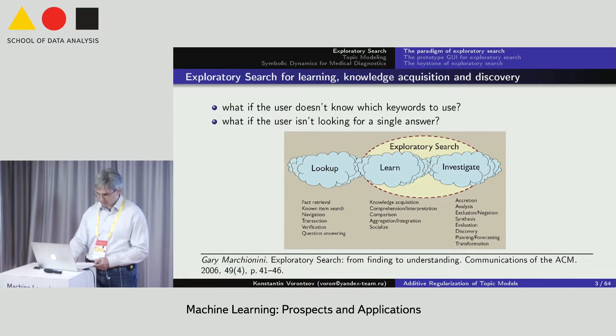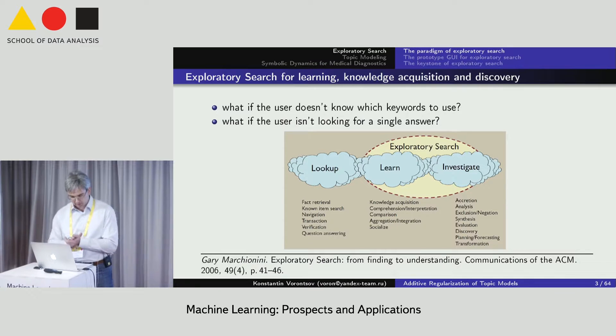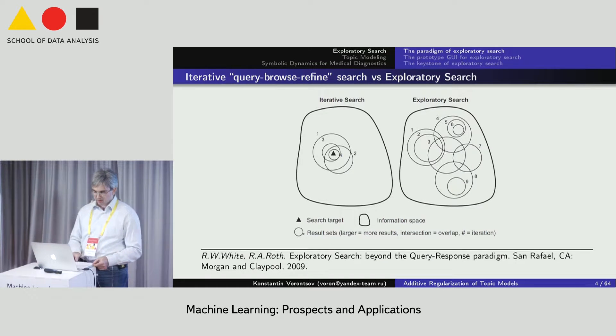However, present search engines realize only the lookup methodology of information retrieval. They are inconvenient when the user is not familiar with the knowledge domain or when the search goals are not clear to the user. In these situations, the user has to repeat his queries, browse the results, then refine his query again and again. The problem is that it is difficult to go far from the initial query starting point of the search, and it is almost impossible to obtain a complete picture of the problem domain.